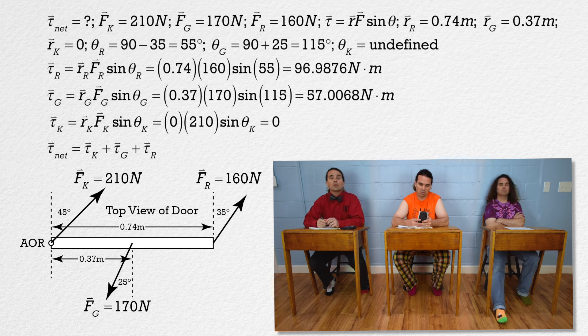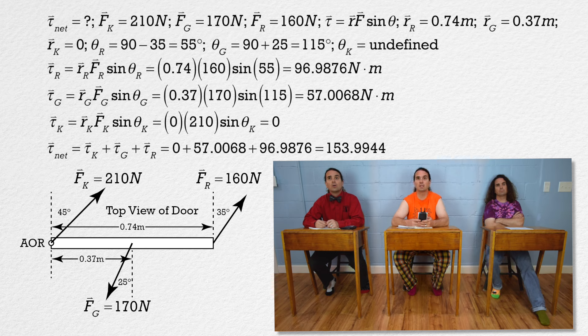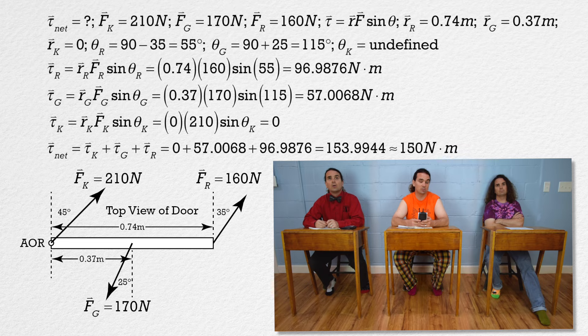Therefore, the net torque equals the sum of those three torques, which works out to be 153.9944, or 150 newton meters with two significant digits.